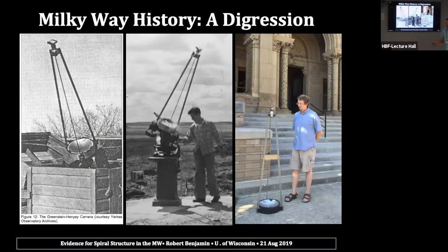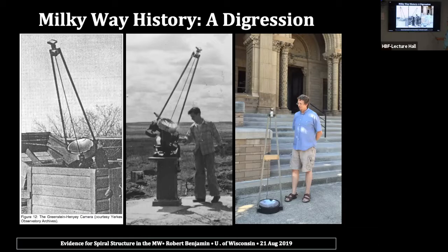Just a quick digression: the camera used to identify the HII regions was built at Yerkes and was used by Morgan, Sharpless, and Osterbrock. In doing historical research, I asked, what happened to that camera? As it turns out, I found it — it had been misplaced, and where it ended up was down the hall from my office in Madison. A professor at Wisconsin, Art Code, borrowed the camera from Yerkes in 1952 or 1953 and never gave it back. It lingered in the closet for several decades. It was known to be an interesting, important camera, but not known it was used to map spiral structure. I discovered this a few years ago and we sent it back to Yerkes Observatory, where it belonged.